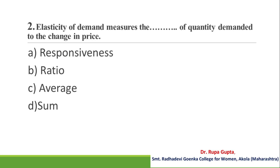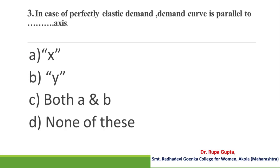Question number 2: Elasticity of demand measures the dash of quantity demanded to the change in price. Options: A. Responsiveness, B. Ratio, C. Average, D. Sub. And the answer is A, Responsiveness.